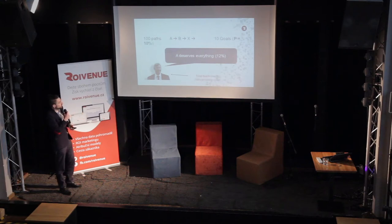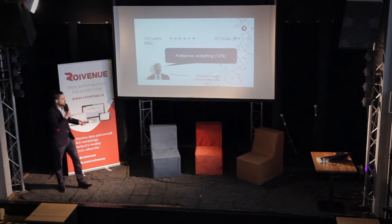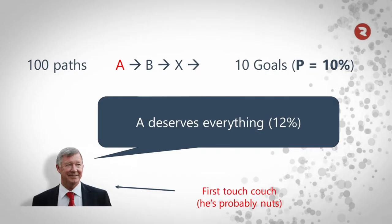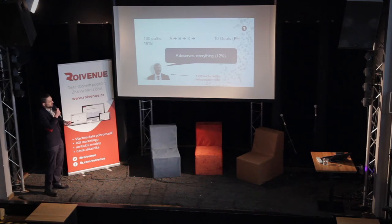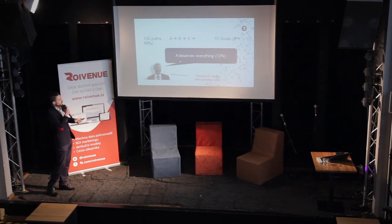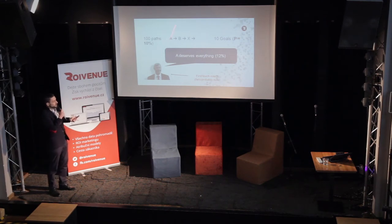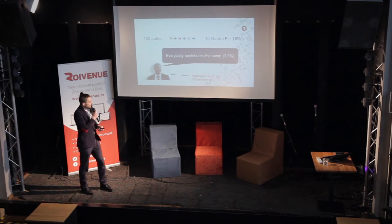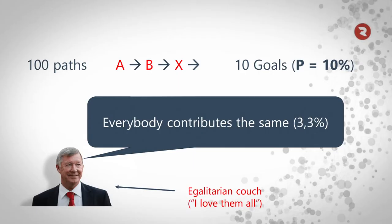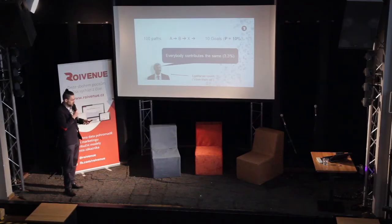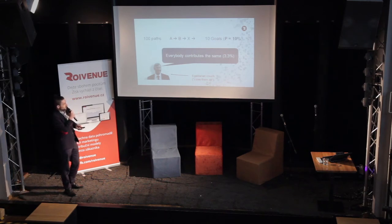If you have what I'd call a last touch coach, he would look at what was at the end of the conversion path, see that it was channel X, and give all the credit — 10% — to X. A and B get nothing. Then there's a first touch coach who says the first player deserves all the credit. And then there's an egalitarian coach who says 'I love them all' — there were three channels in the path, so everybody deserves a third. But as you can see, the results differ a lot depending on which approach you take.